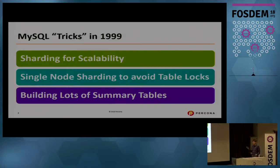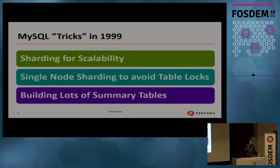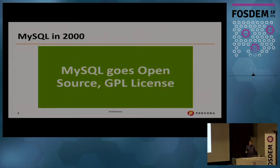In '99 we used MySQL tricks you may be aware of by now, such as sharding to multiple MySQL nodes for scalability. And because of MyISAM table locks we would shard to have multiple tables and databases on a single node to make those less painful. We also had to build lots and lots of summary tables, because aggregating large amounts of data in MySQL was never quite pretty.